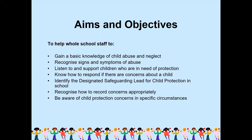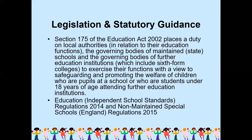First of all, what are the aims and objectives of this training? To help whole school staff gain a basic knowledge of child abuse and neglect; recognize signs and symptoms of abuse; listen to and support children who are in need of protection; know how to respond if there are concerns about a child; identify the designated safeguarding lead for child protection in school; and recognize how to record concerns appropriately. Be aware of child protection concerns in specific circumstances.